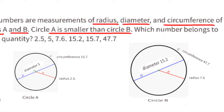Let's look at the other numbers. 7.6 could be the radius of circle B, and 7.6 times 2 would be 15.2. So the diameter of circle B would be 15.2. That leaves us with 47.7. So the circumference would be 2 times pi times the radius, and in this case 2 times pi times 7.6 equals 47.7.